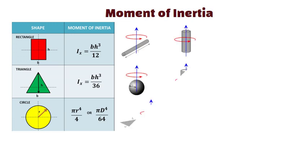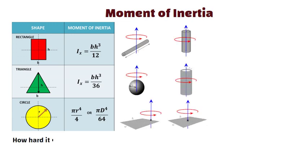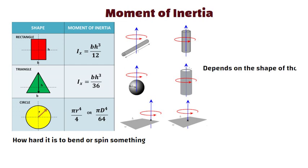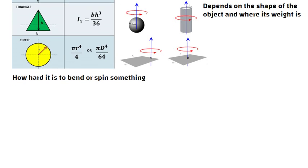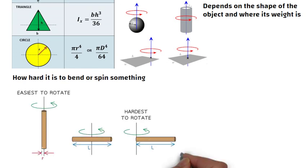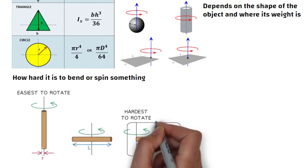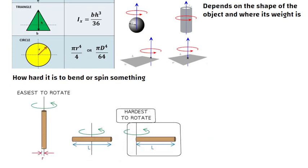Moment of inertia. The moment of inertia is a way to measure how hard it is to bend or spin something. It depends on the shape of the object and where its weight is. If the weight is farther from the middle, it is harder to move.